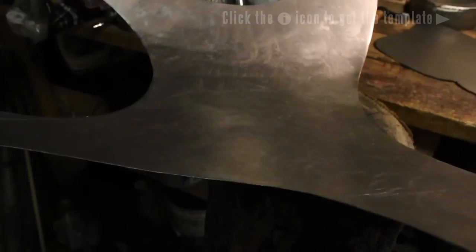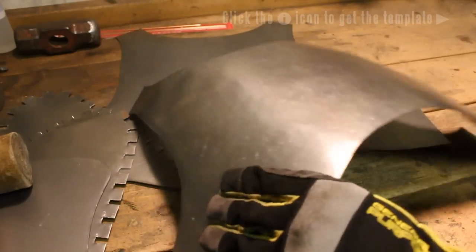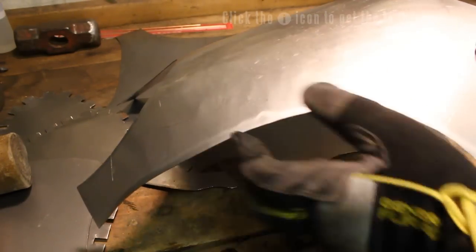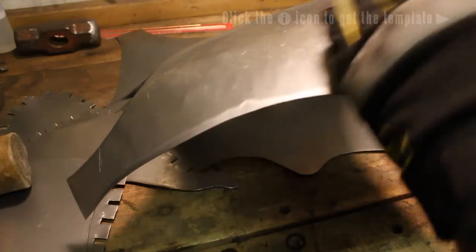Here we're beginning the rounding. You don't have to use a rawhide hammer, but I find it's a little bit more gentle on the metal. It doesn't scar it as bad as the regular hammers do. I want to get curves in both directions though, so I need a little bit more dishing on this piece.